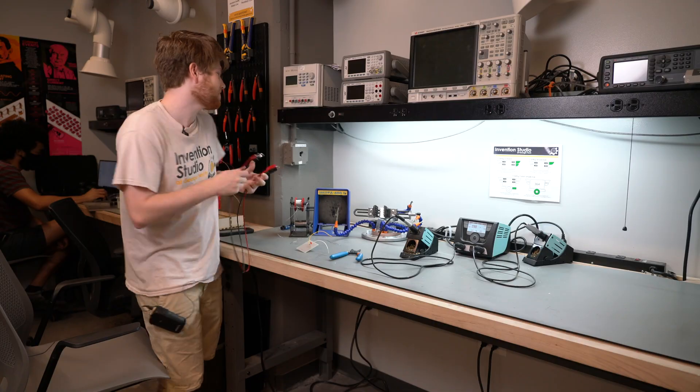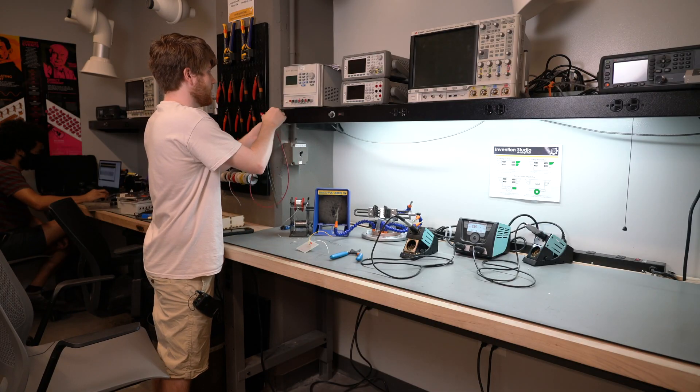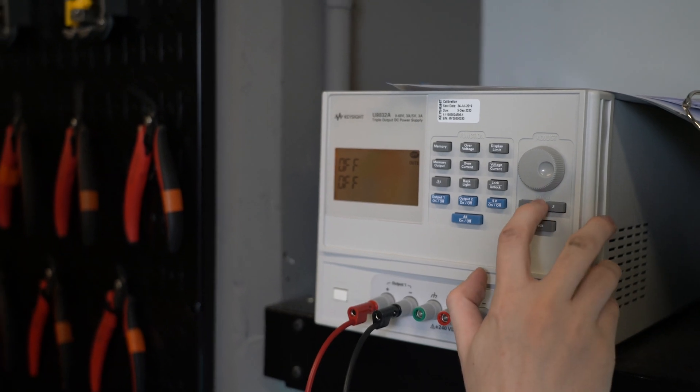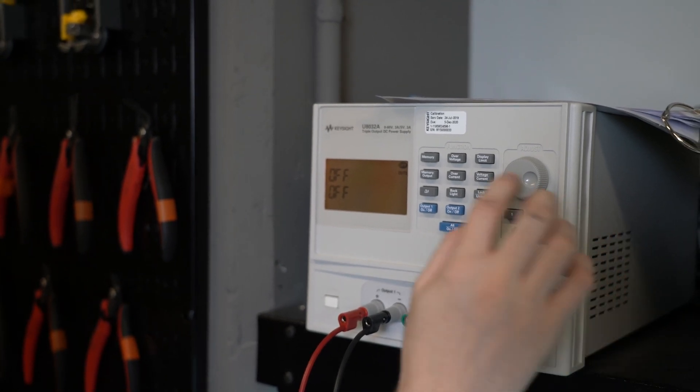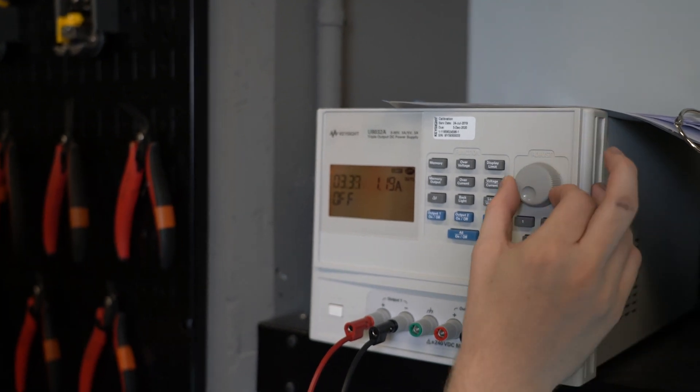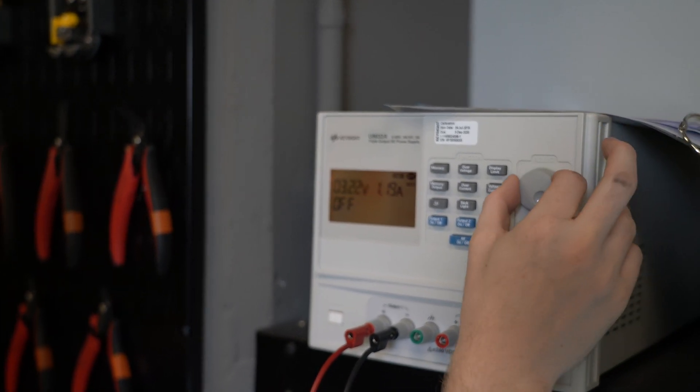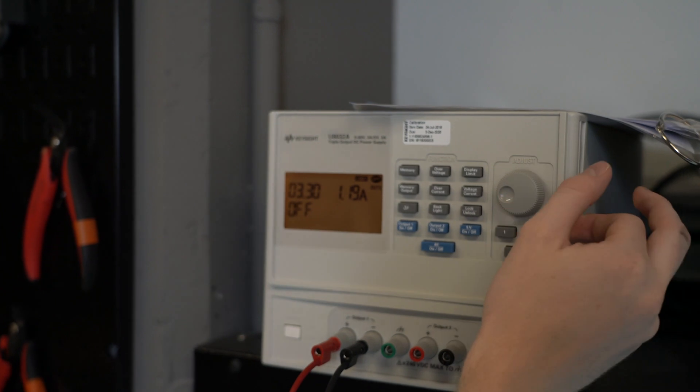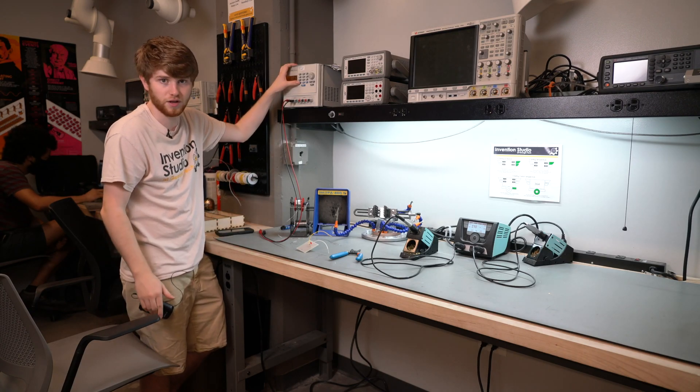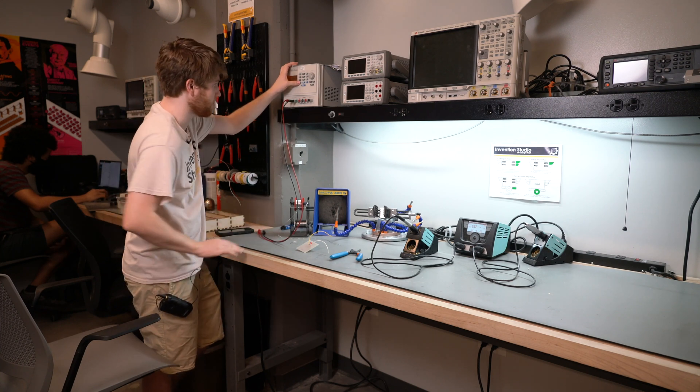Next, you want to get two jumper cables and connect them to the power supply. Positive and negative of output one is what I'm using. Then, turn on the power supply, display limit, reduce this to 3.3 volts, and when you hit output one on, it will put 3.3 volts on the end of these jumper cables.